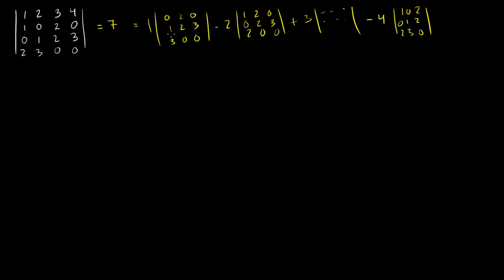What I want to show you in this video is that there's more than one way to solve for a determinant. The same expansion we did along the first row can actually be done along any row or any column of the matrix. This is useful because we can pick rows or columns that have an unusually large number of zeros, which tends to simplify our computation.